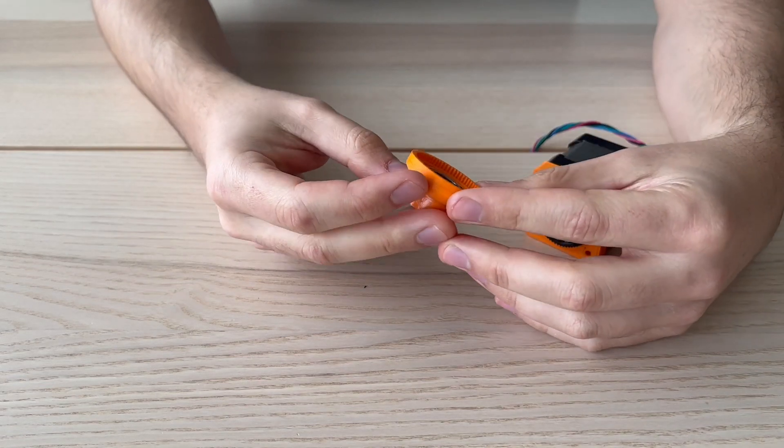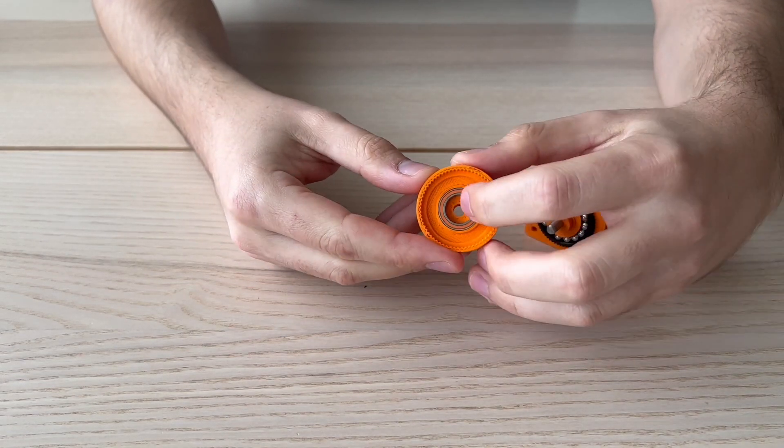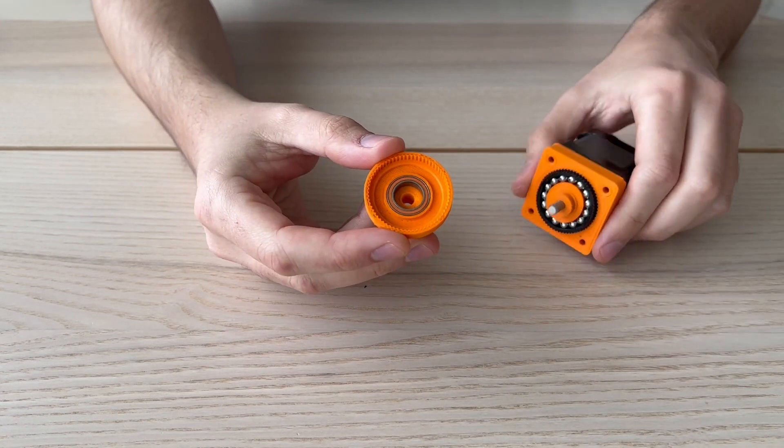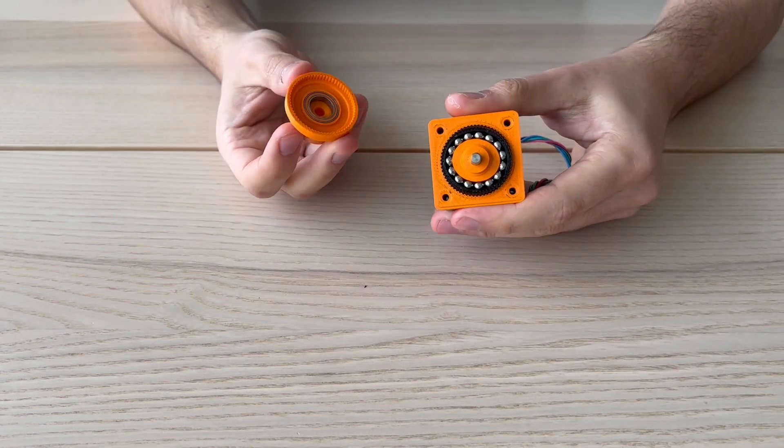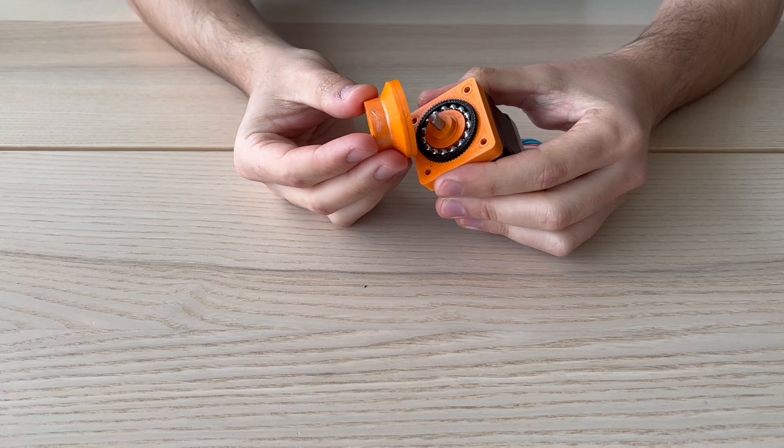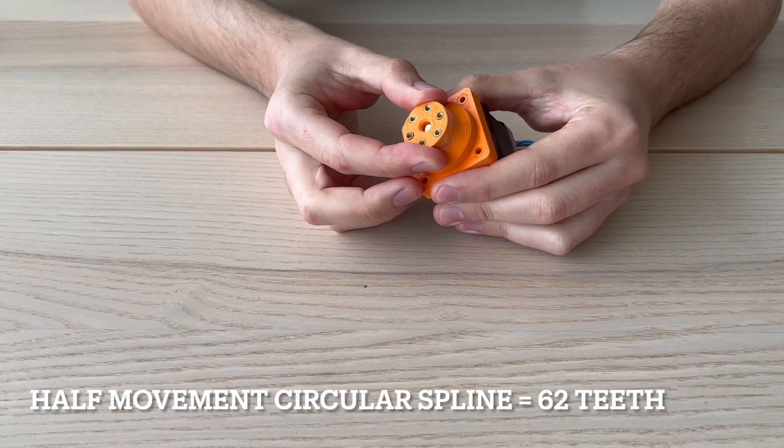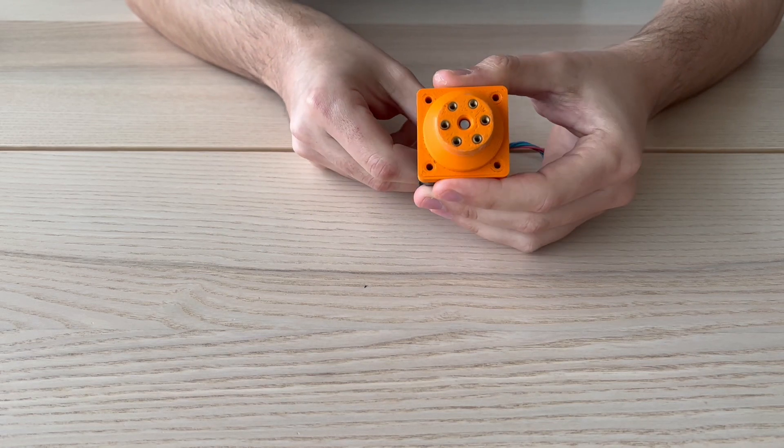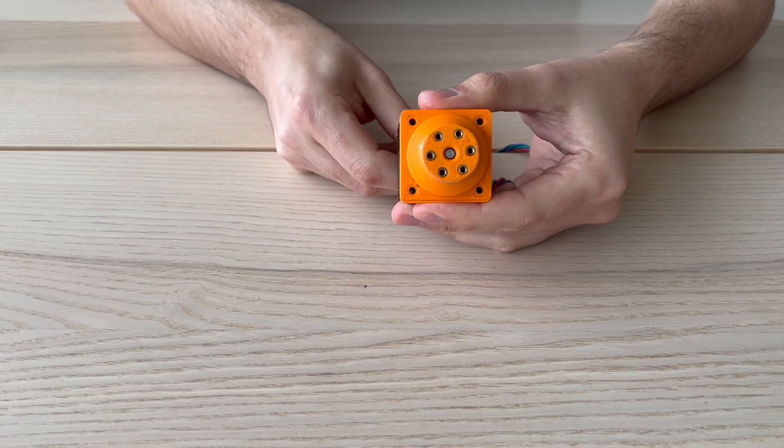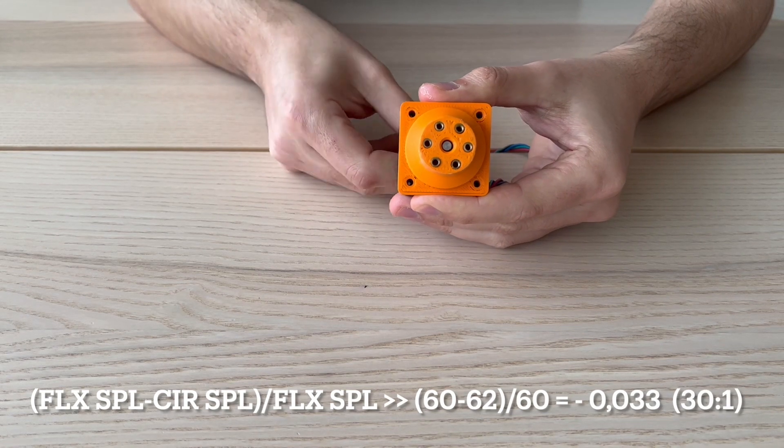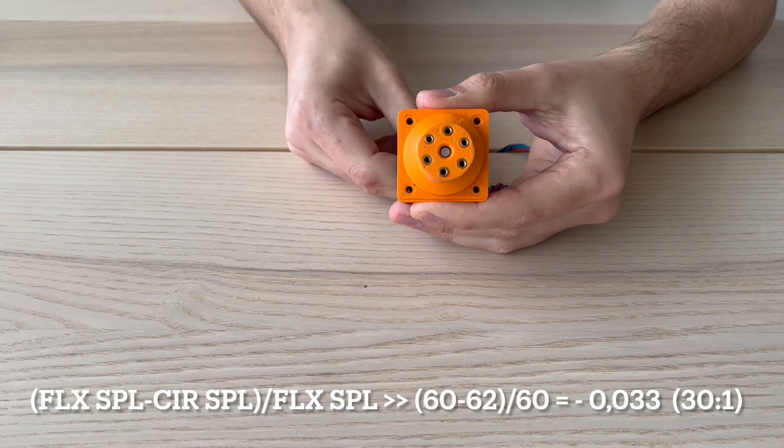Let's assembly now the last movement circular spline. I already introduced a bearing inside to keep all components aligned. This half movement circular spline has two more teeth than the other ones. These two extra teeth makes the movement possible. The ratio of this strain wave gear is then 30 times slower.